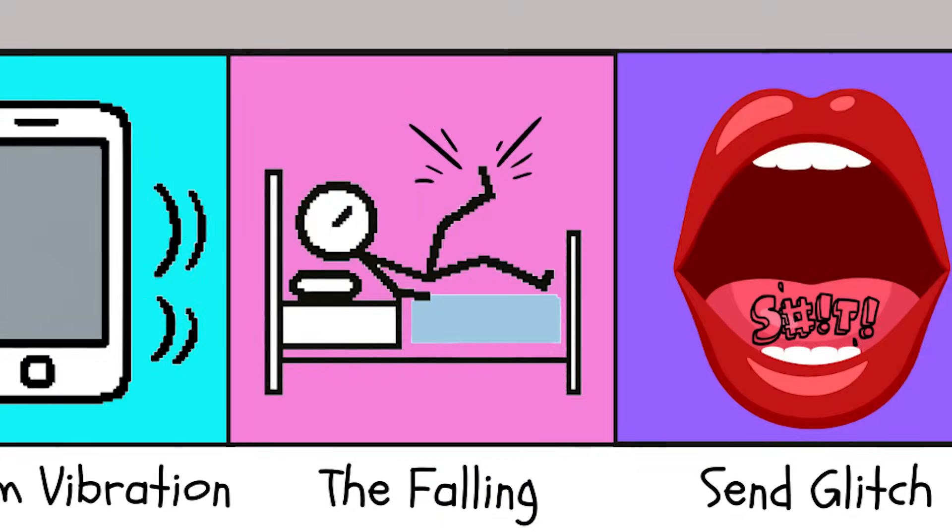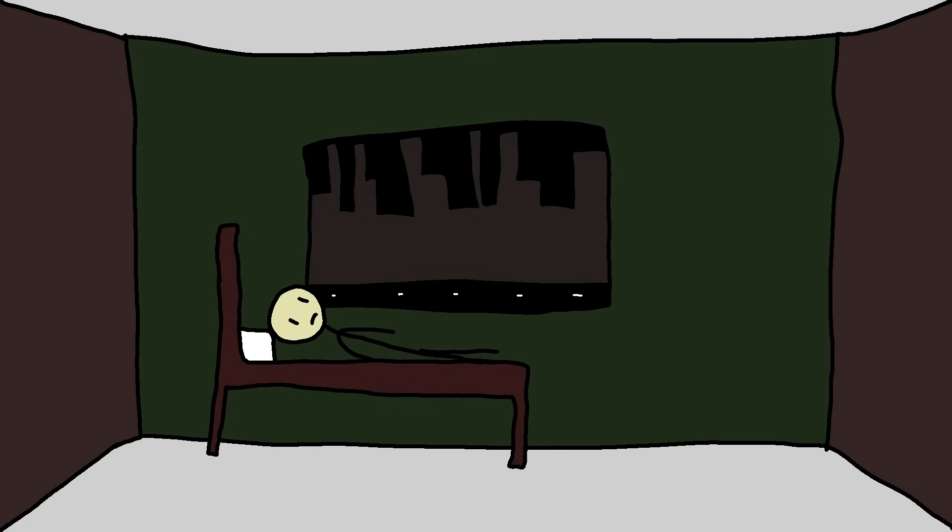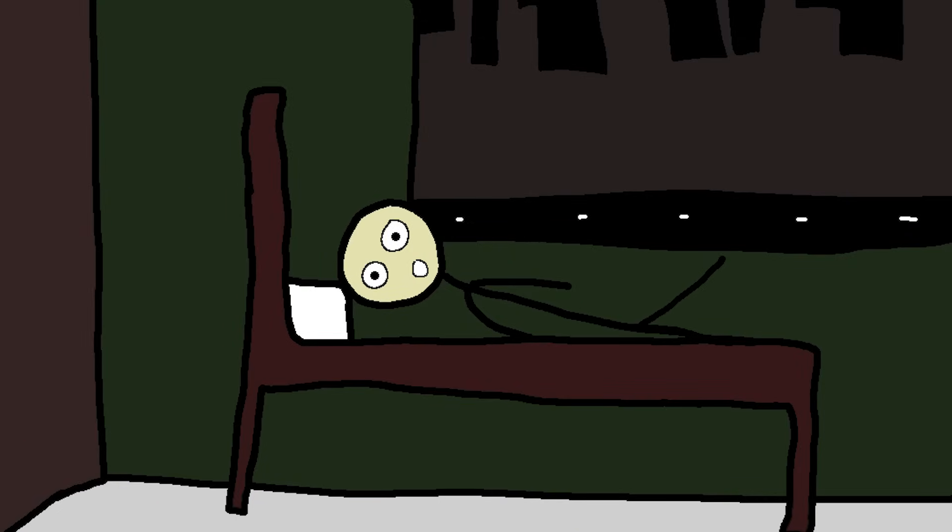The falling glitch. You're finally drifting off. Lights off. Thoughts fading. Peaceful. Then your leg suddenly kicks like it just saw a spider. That falling feeling hits, instant and sharp. You jolt like your body just got hit with a system error. Except you didn't fall. You were in bed the whole time.